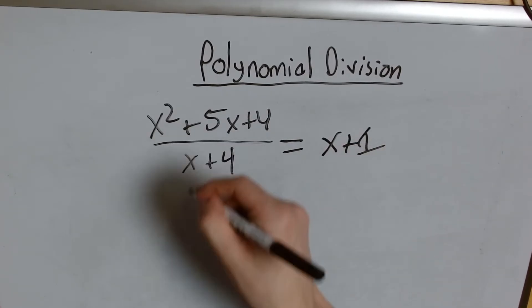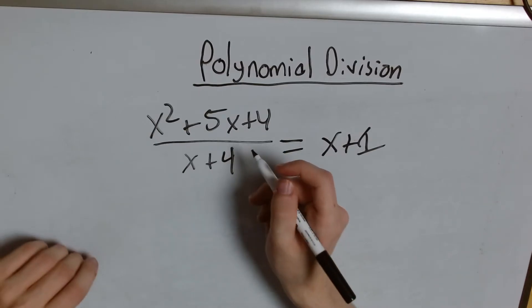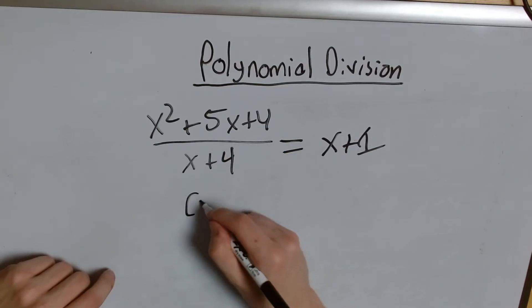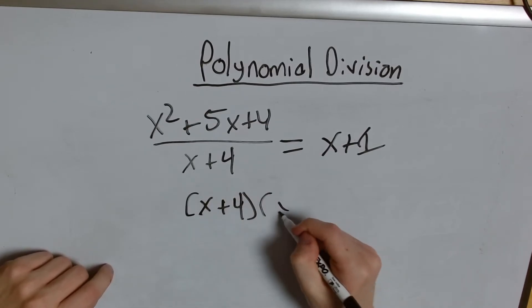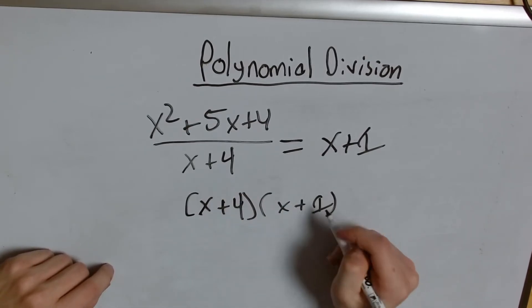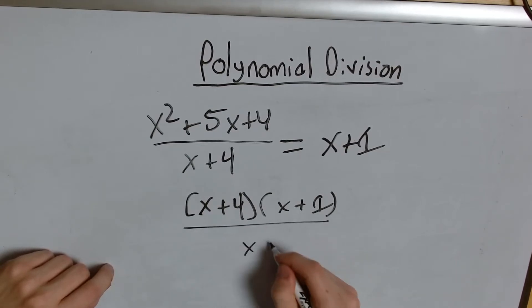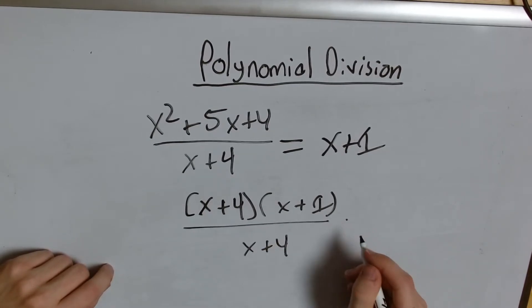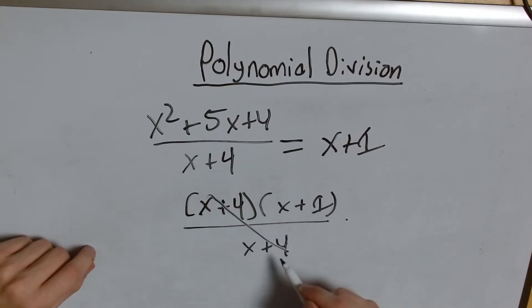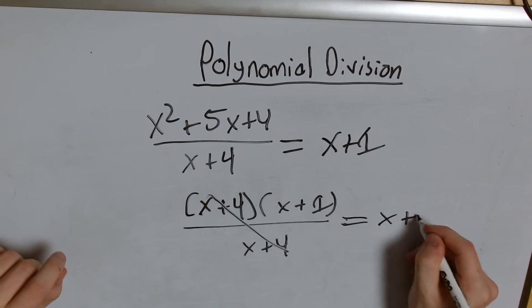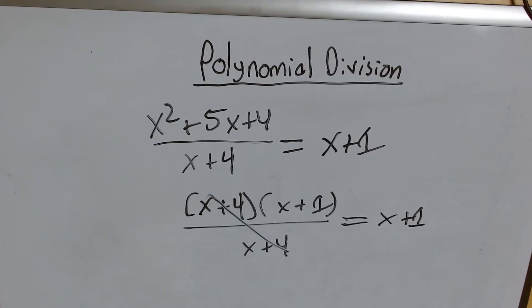We're saying x squared plus 5x plus 4 divided by x plus 4 is equal to x plus 1 that was our answer. Well if we factor x squared plus 5x plus 4 we actually have x plus 4 times x plus 1 over x plus 4. So then it's no wonder that we get x plus 1 basically canceling out this term so we have x plus 1 as our answer.